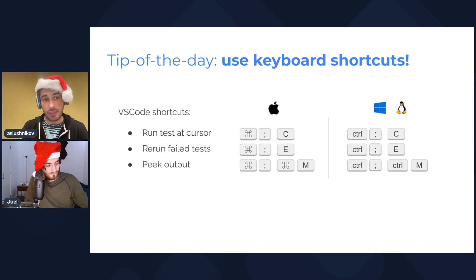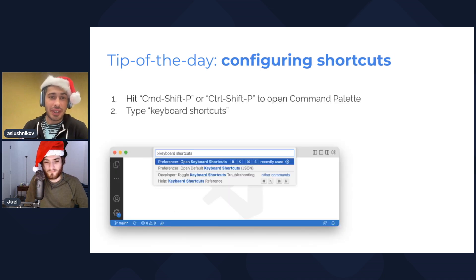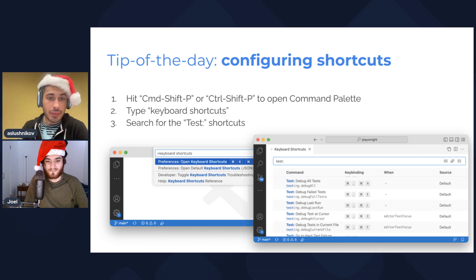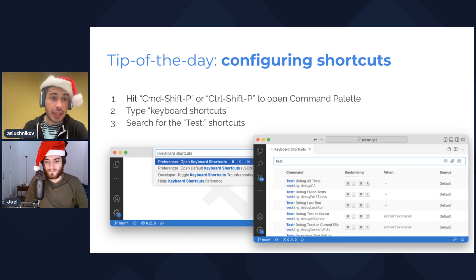There is a pro tip — you can configure your own shortcuts. To do so, open the command palette, type 'keyboard shortcuts' in the search, and search for all shortcuts that start with 'test:'. That's how you can learn more shortcuts and maybe find something suitable for your specific workflow. For example, if you constantly rerun failed tests, you can remap it to F1 or something really simple.